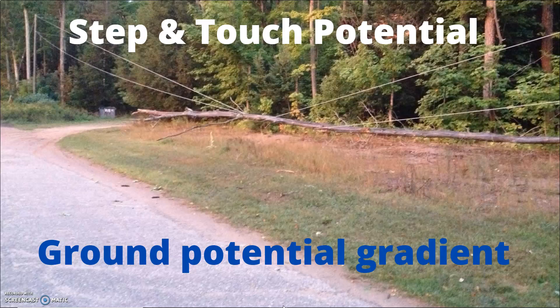When an energized conductor falls across a chain link fence or directly to the ground, the object and immediate area become energized, creating a zone of high voltage in relation to the ground. The actual voltage depends on the source resistance of the object and soil conditions, which include the material and moisture content. The dissipation of voltage from a grounded conductor or energized grounded object is called the ground potential gradient, and the voltage drops associated with this dissipation are called the ground potential. The voltage decreases rapidly with increasing distance from the ground end.